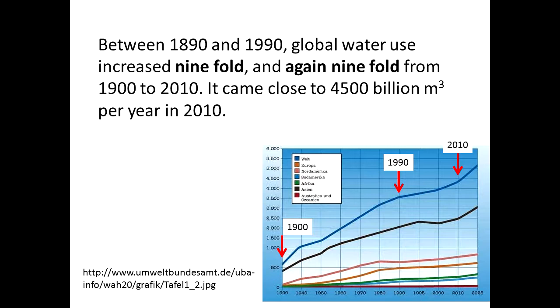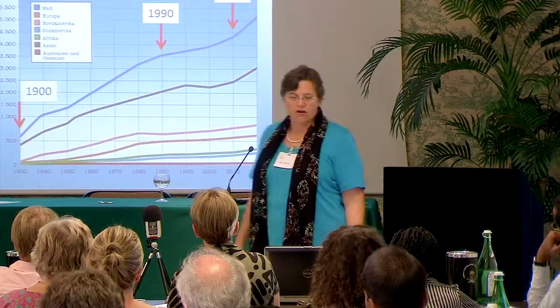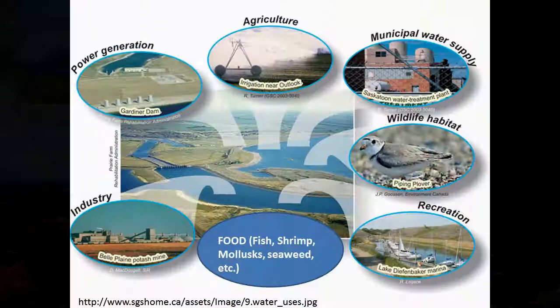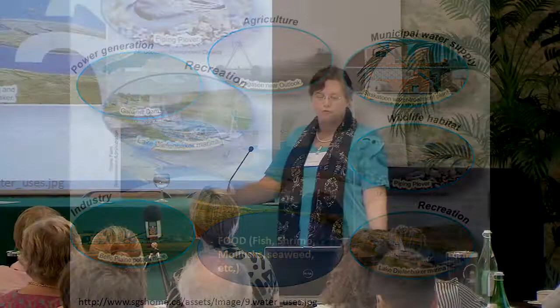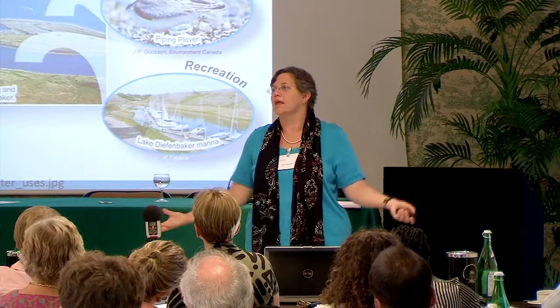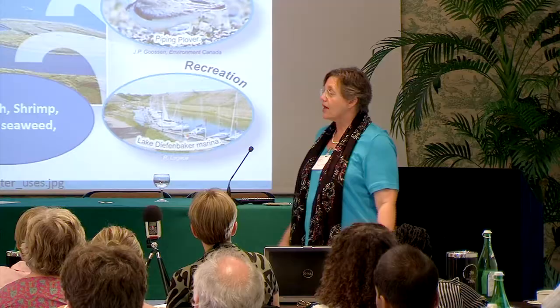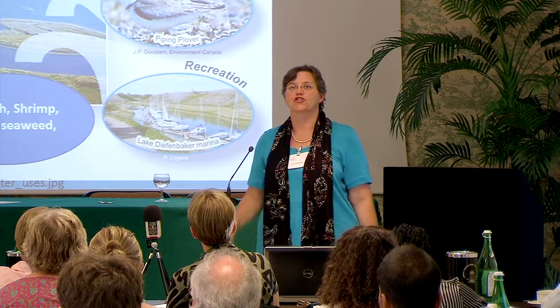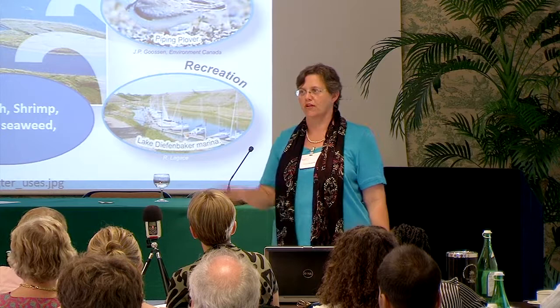Looking at the graph, Asia comes first, then North America, then Europe. There's not very much happening in Africa because irrigation agriculture is not as prominent there. Regarding the multifunctionality of water: power generation, industry, cooling, agriculture, domestic use in villages and urban areas, wildlife habitat, and recreation. One thing is missing — fish, mollusks, shrimp, and seaweed — because many modern water managers don't think of freshwater as a source of food anymore. When they talk about the sea they think about fish, but not freshwater fish.